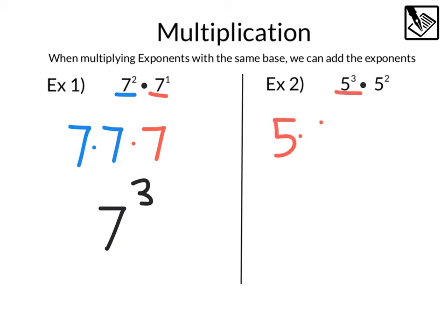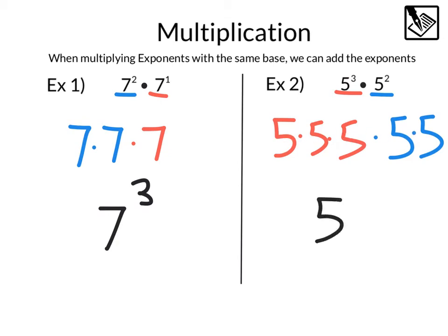How about example two? Five to the third power — five times five times five — times five to the second power, times another two fives, will give us a total of three plus two, or five. So we have five to the fifth power.